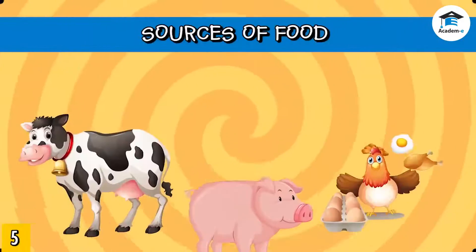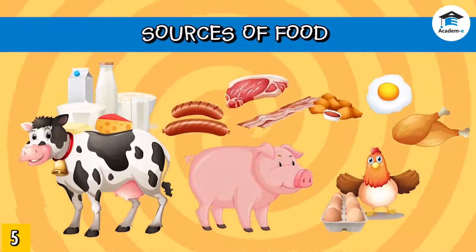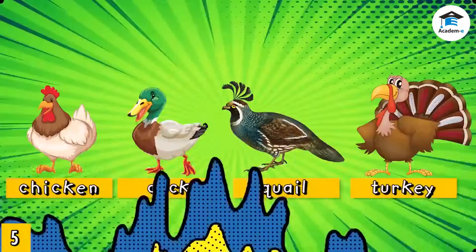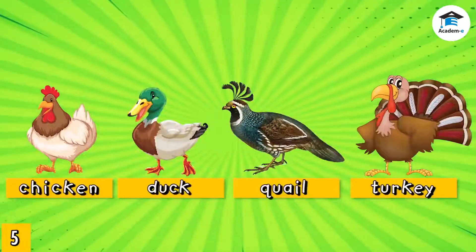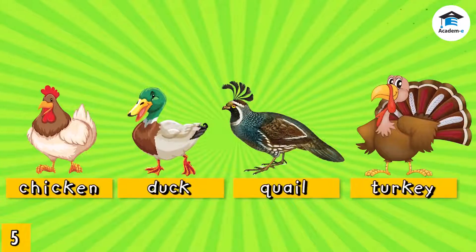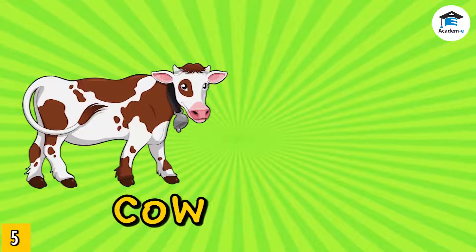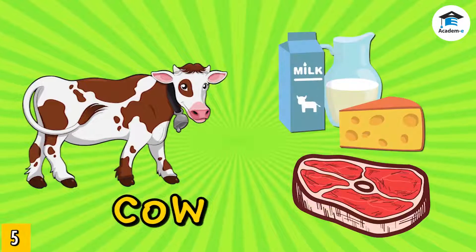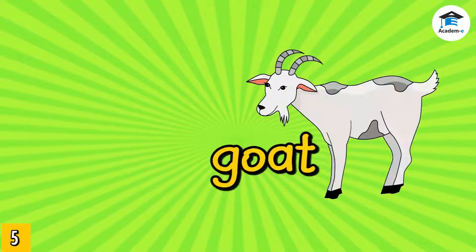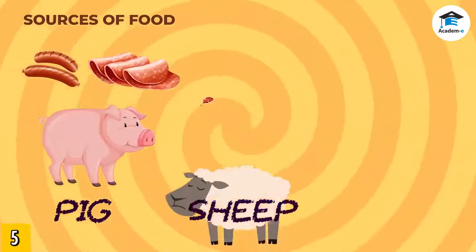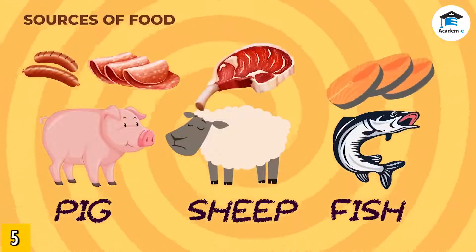Animals provide food for people. Farm animals are animals people breed and raise as food, either for their own consumption or for selling. These animals include chickens, ducks, quails, and turkeys, which give us eggs and meat. Cows provide us with beef, milk, and cheese. Goats provide us meat and milk. Pigs, sheep, and fish provide us with meat.